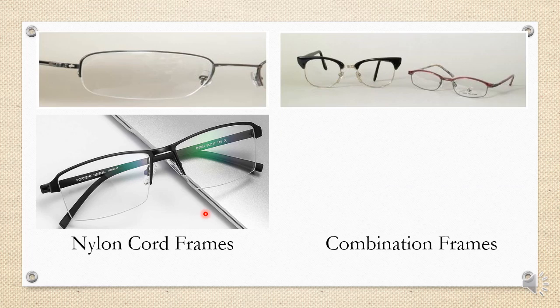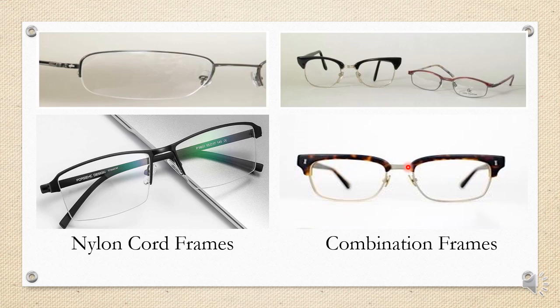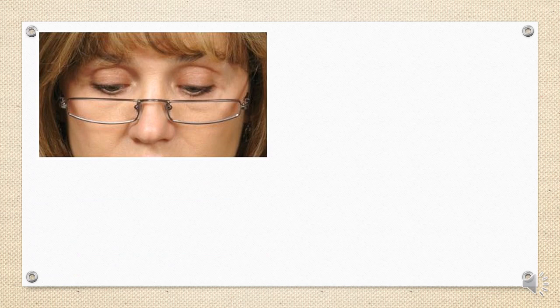Combination frames combine plastic and metal. Typically the upper portion of the frame is made of plastic, while the lower portion of the eye wire is made of steel. The bridge and parts of the temple can also be metal. Because it combines both materials, it is called a combination frame.